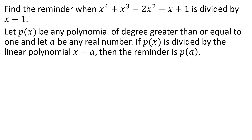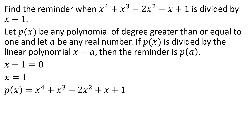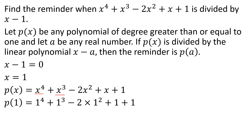P of x is a polynomial. Remember, x minus 1 is the divisor. Now, x minus 1 is equal to 0, then x is equal to 1. Now x equals 1, so P of 1 is what we need to find. Then x minus 1 equals 1.